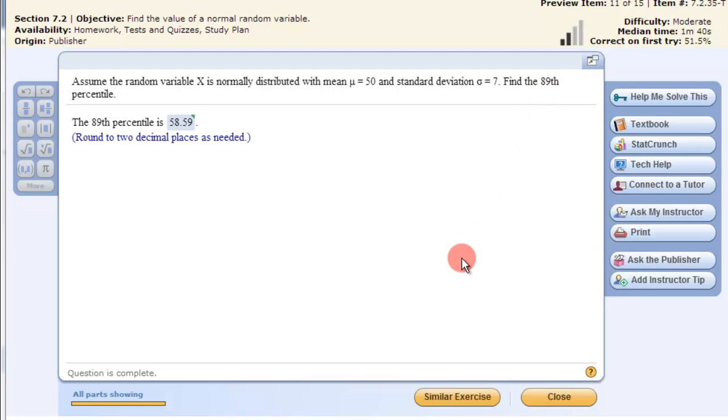The 89th percentile refers to the area to the left being 0.89 or 89%. We want to find the normal value that corresponds to that area.